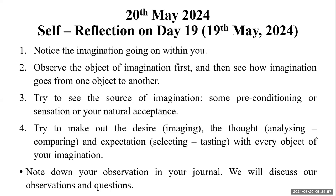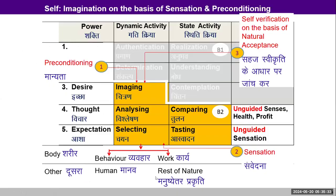If any question is there regarding the discussion so far, we can discuss. A student asks: do desires start first and then we go for thought, then expectation — or is it random? For example, does thought arise first, then desire, or does expectation drive what desire arises? The student wants clarity on which is the source. Does it start with desire, then extend to thought, then implement as expectation?